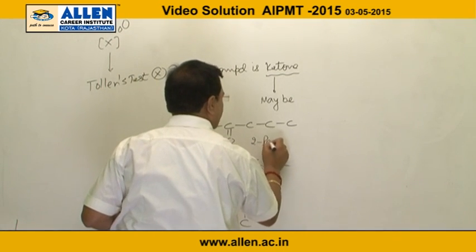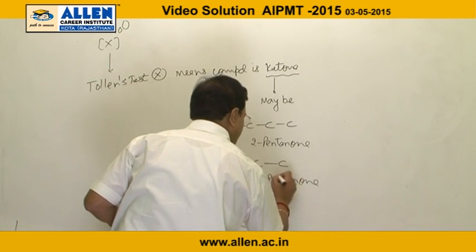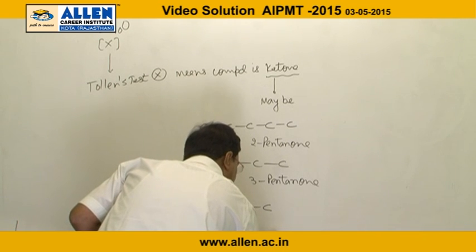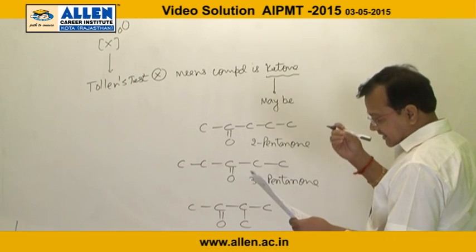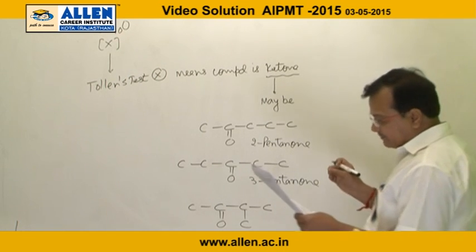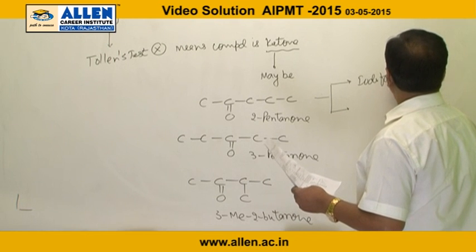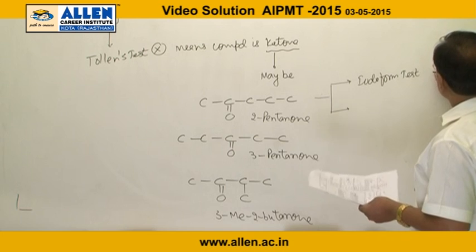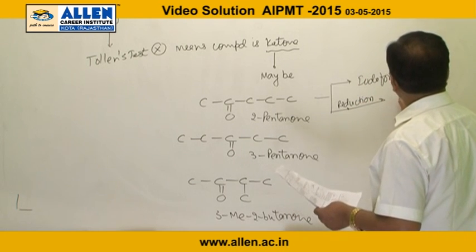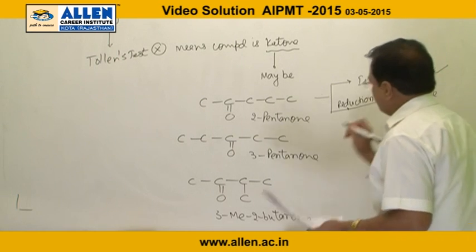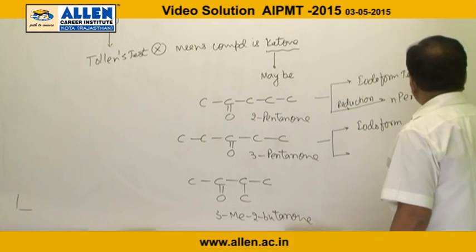Narrowing it down: 2-pentanone and 3-methyl-2-butanone both show the iodoform test, and 2-pentanone on reduction forms n-pentanol. The question specifies a compound that produces n-pentanol on reduction.